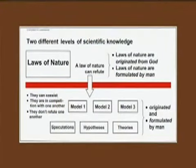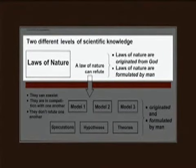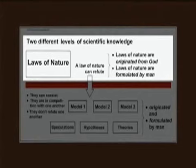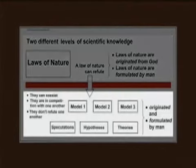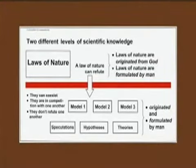Here you see different levels of scientific knowledge. Above the red line are the laws of nature. We can say the laws of nature originated from God and are formulated by men. Below the red line are other levels: models or speculations, hypotheses or theories — all originated and formulated by men. There is a very large gap between the laws of nature and all other levels of scientific knowledge. Therefore it is possible that a law of nature can refute a model, speculation, or theory.